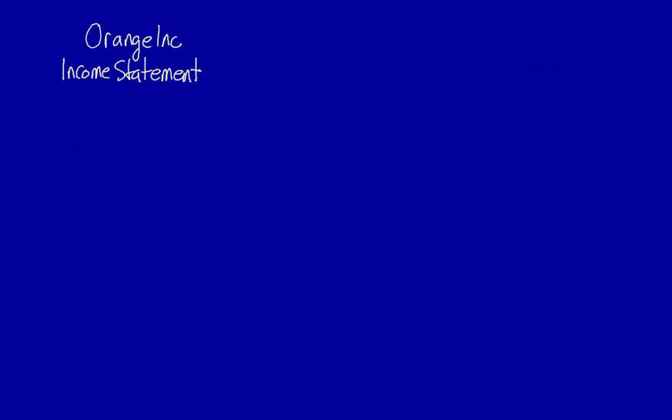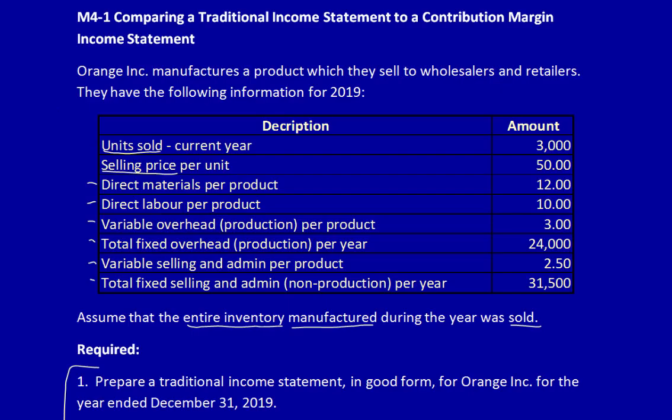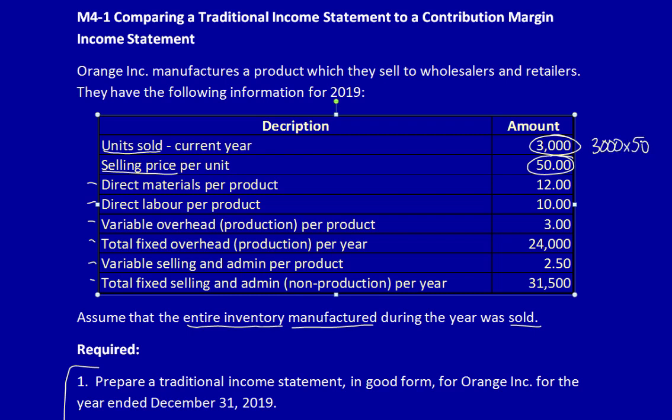I'm going to start with the traditional. As always, start with the company name, then the name of the statement, and then the period of time covered. This is a multiple-step income statement because we're actually selling products. So we start with sales revenue. Let's go back to the chart: units sold is 3,000, selling price per unit is $50. 3,000 times 50 is equal to $150,000 — the amount of the sales revenue.